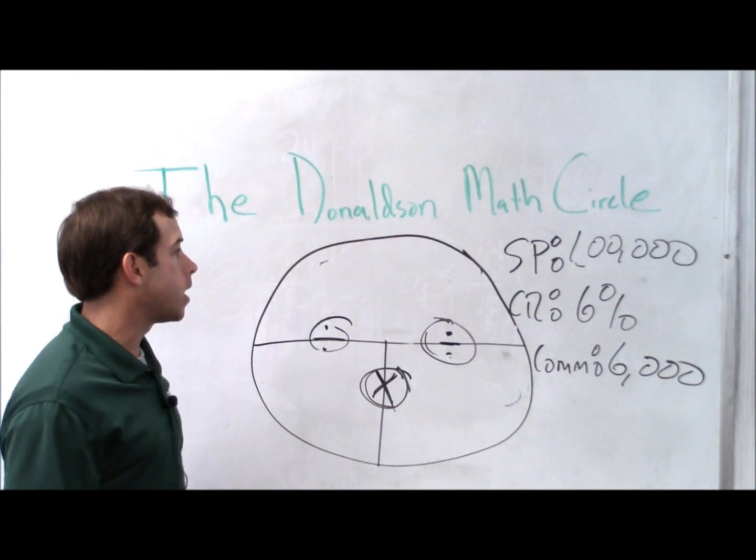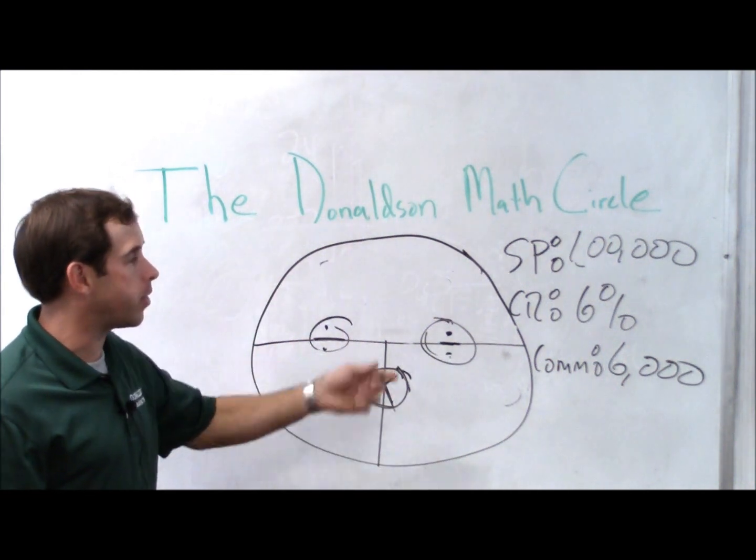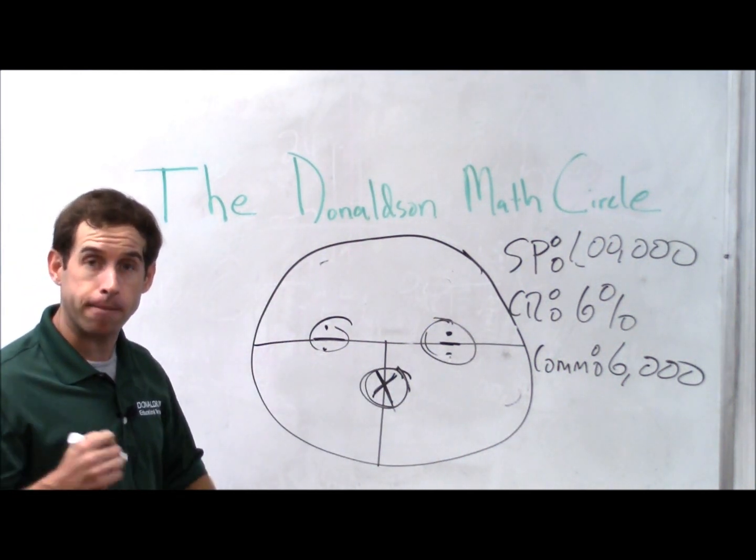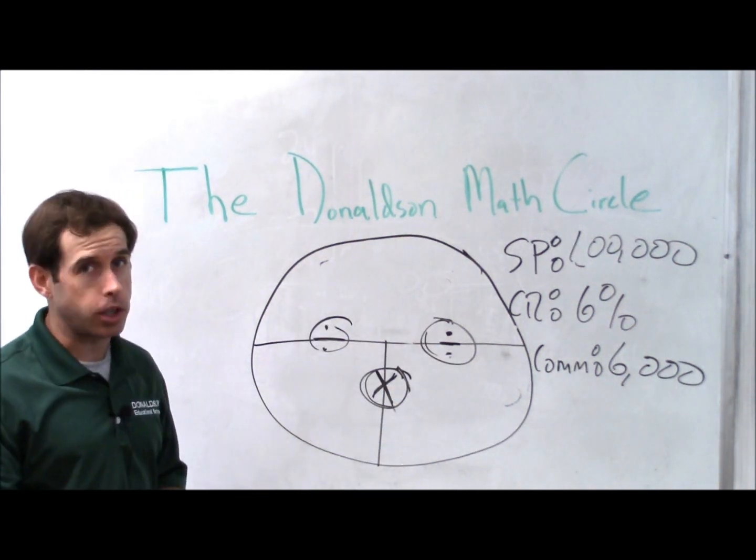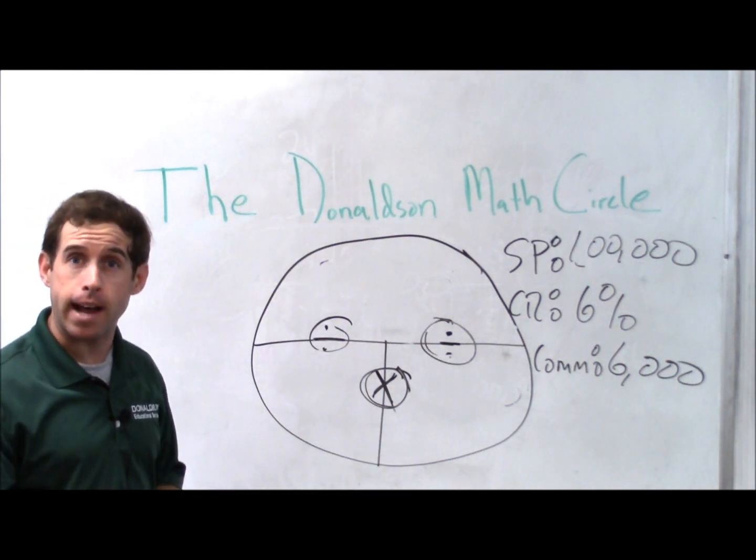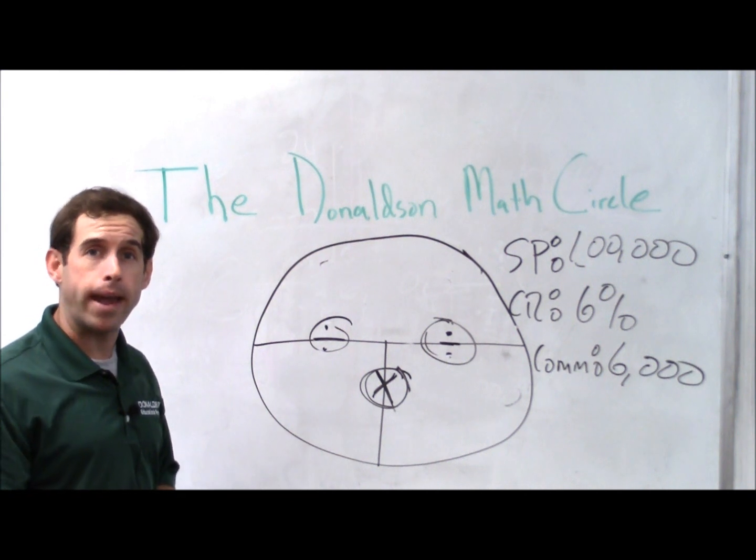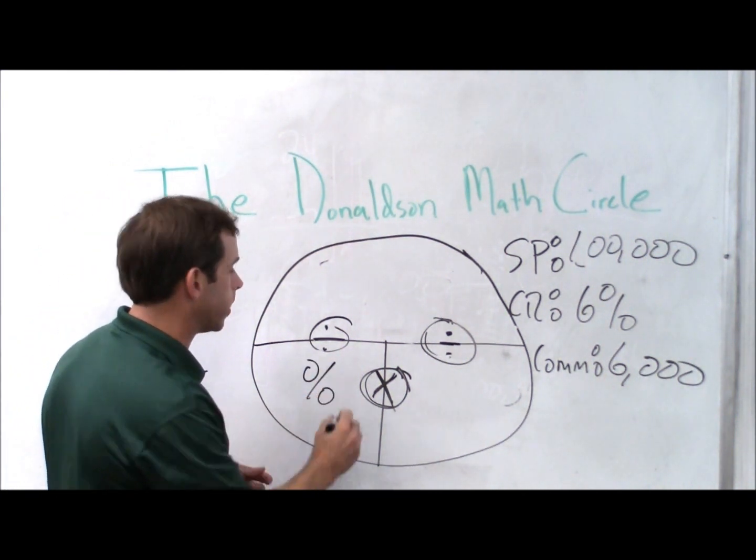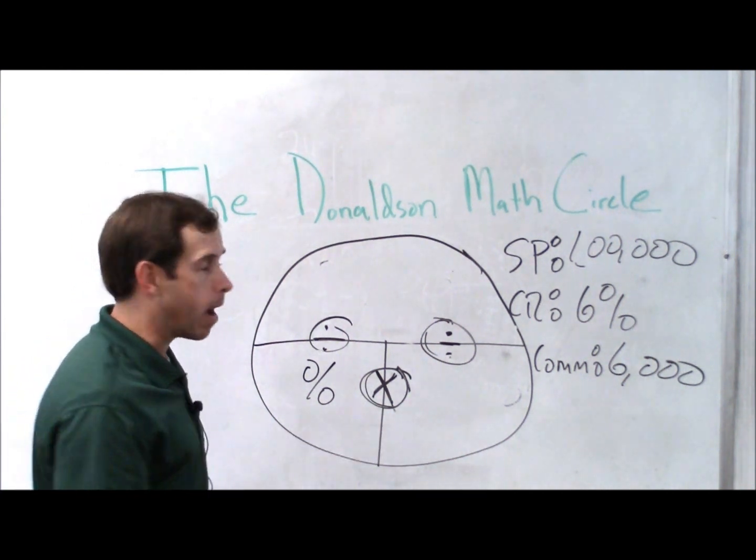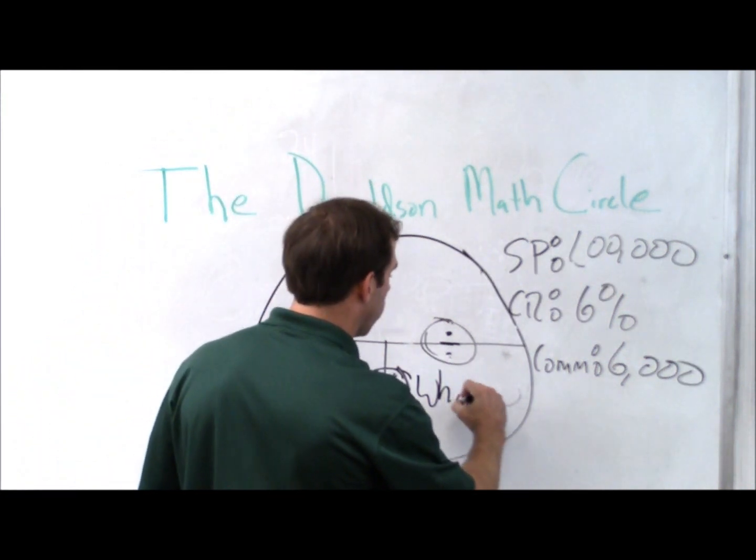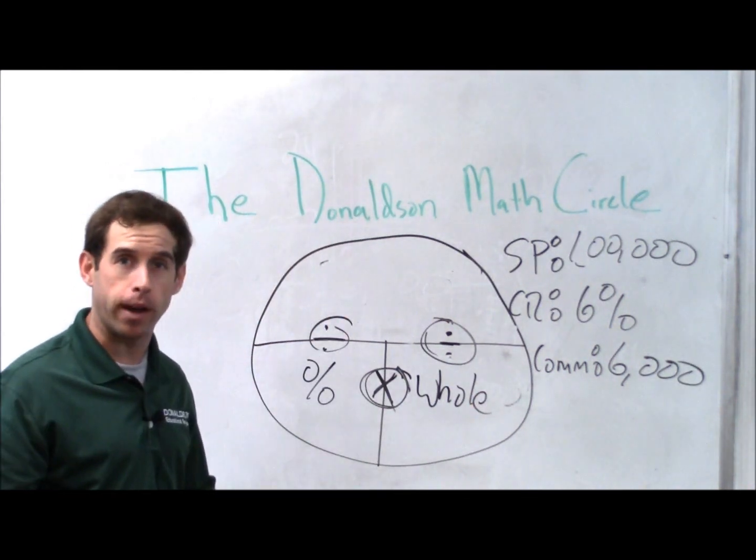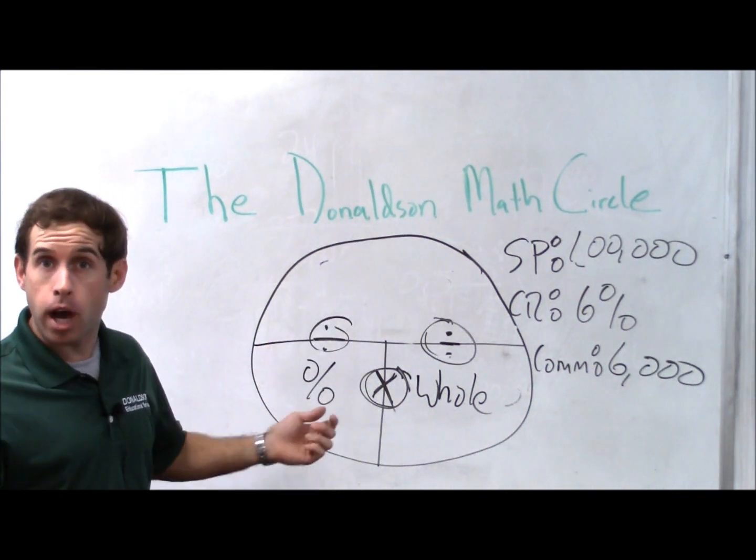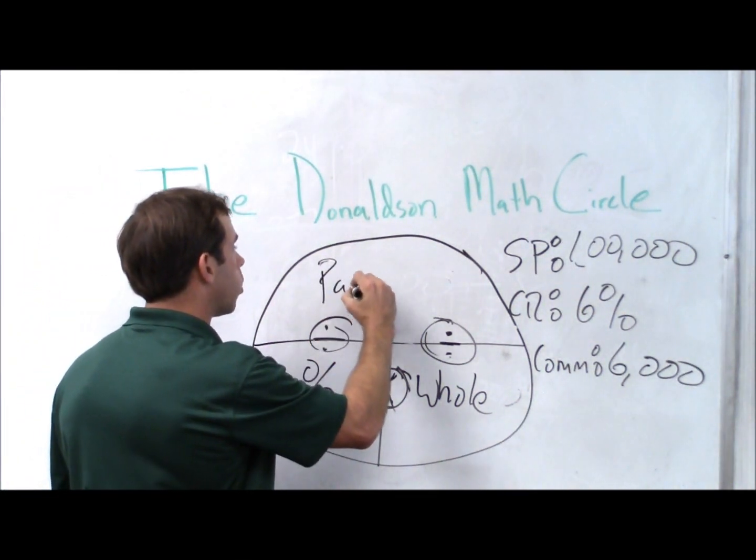So let's take a look at how it works. First and foremost, it's basically just a circle with a T bar drawn within it. And the secret to the circle is to use it the same way every time. So to use it the same way every time, on the bottom left we always put the percentage. On the bottom right we always put the whole amount, or the big number. And on the top we always put the part, or the target.